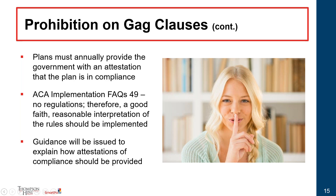The CAA also requires that plans annually report to the tri-agencies an attestation that the plan is in compliance with the GAG clause prohibition. Future guidance on how attestations are to be provided is expected. The implementation FAQ provides that plans should implement a reasonable good faith interpretation of the statute.